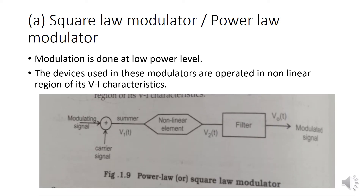This is the diagram for the square law modulator. First, we are having the modulating signal, then a summer, and then the carrier signal. These two are the input signals, which will be given to the non-linear element — that is V1(t). The non-linear element is connected to the filter, that is V2(t). Finally, we get the modulated signal, that is V0(t).